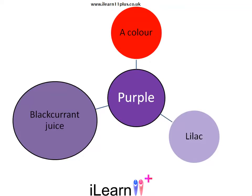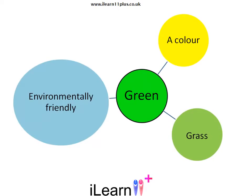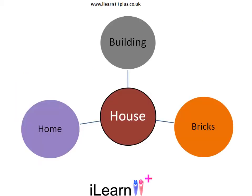Purple. Does purple remind you of blackcurrant juice? Green. Green reminds us to be environmentally friendly. It's the colour of grass and of course it's a colour. House. A house is a building, it's made from bricks and it's a home.